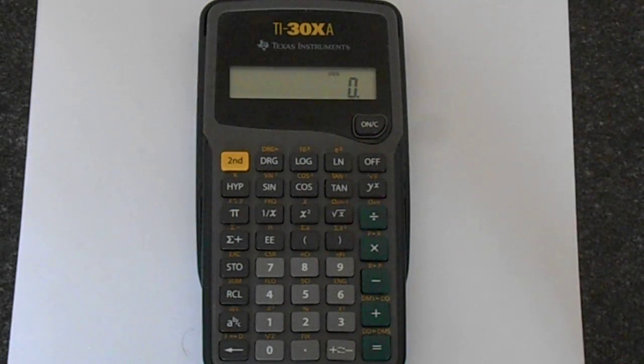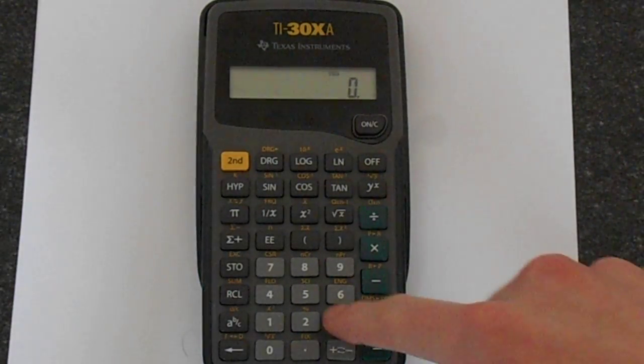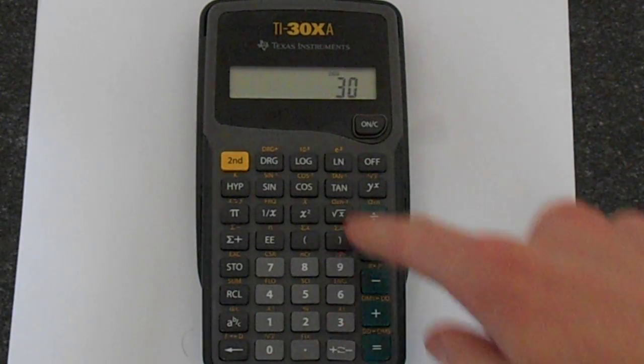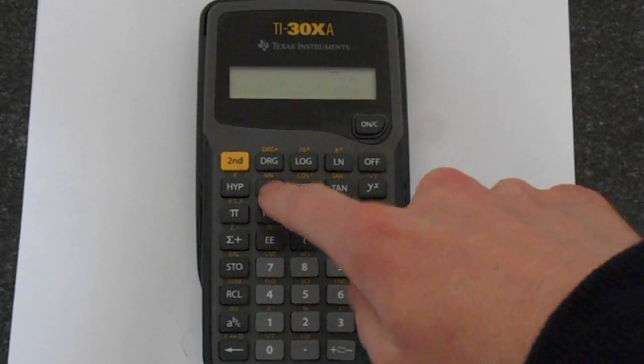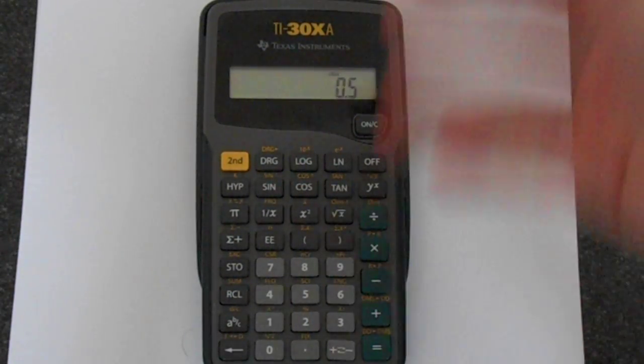If you know your basic trig, you should know the sine of 30 degrees is a half. So 30 and then you press sine and you get one half.